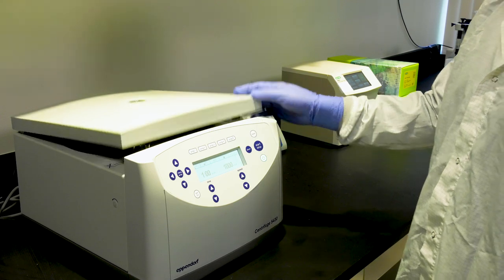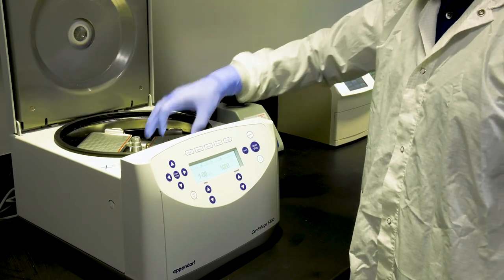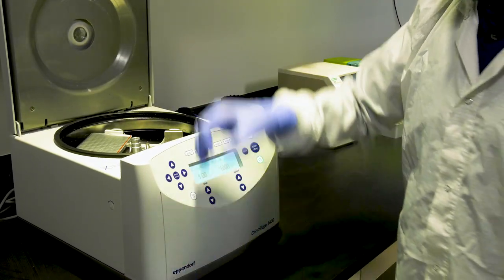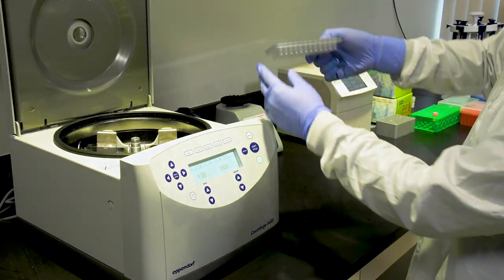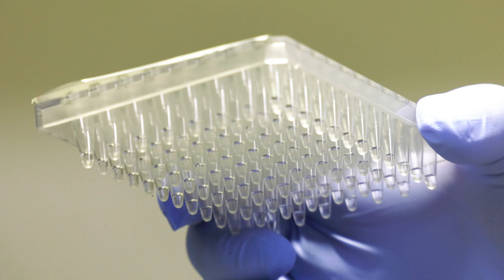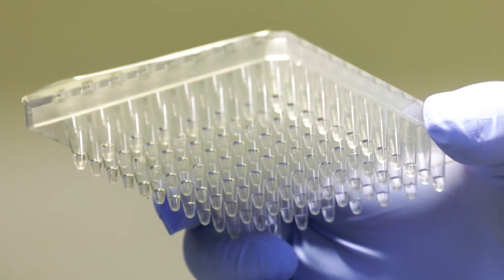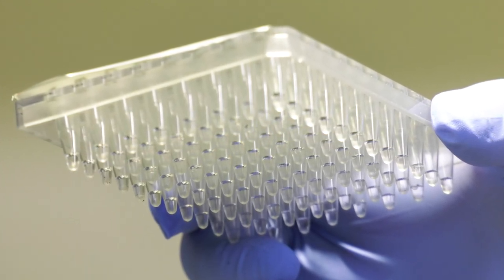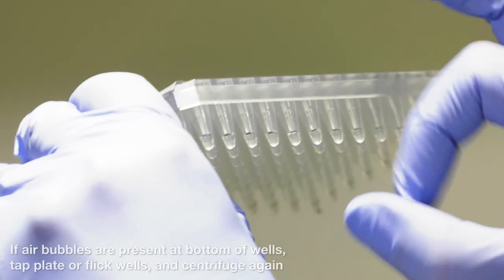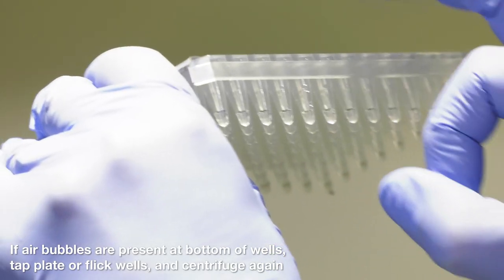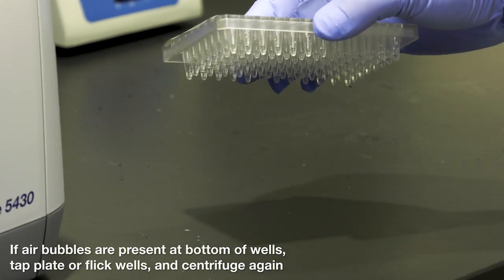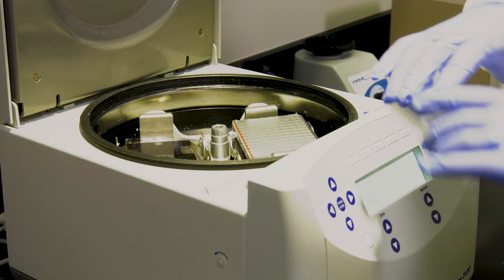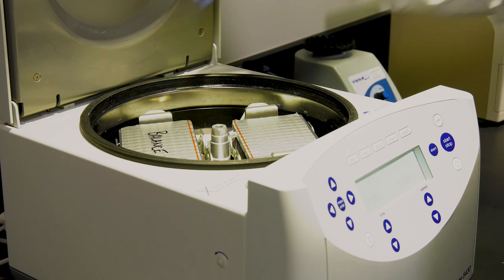Remove the plate from the centrifuge and carefully inspect each well to make sure there are no air bubbles and that all the material is down at the bottom of the wells. If air bubbles are present, you can either flick the well or tap the plate on a hard surface to release the bubbles. Once all bubbles have been released, centrifuge the plate again for one minute.